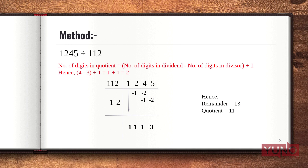The first step is deciding the number of digits that will form the quotient. This equals the number of digits in the dividend minus the number of digits in the divisor, plus 1. Here our dividend has 4 digits and the divisor has 3 digits, so 4 minus 3 plus 1 is 2. Hence 2 digits will form our quotient and the remaining digits will be our remainder.